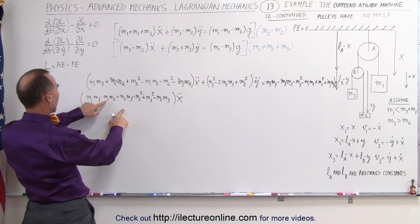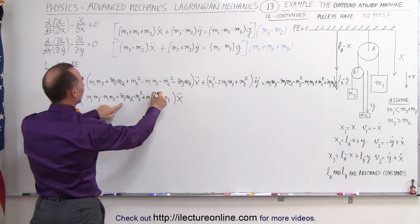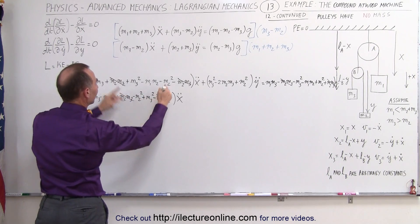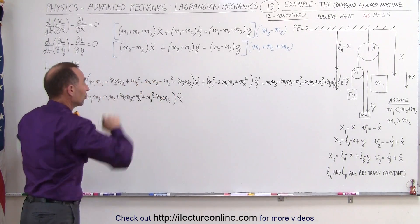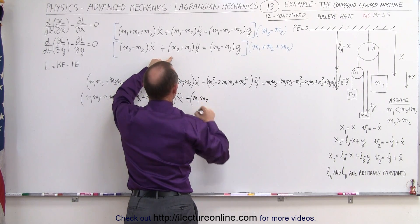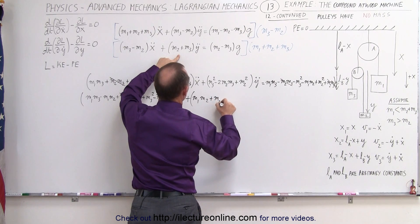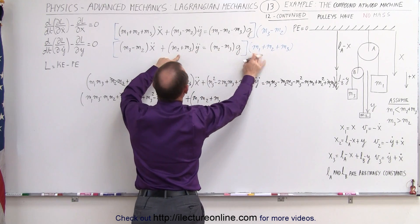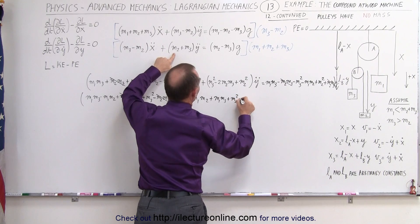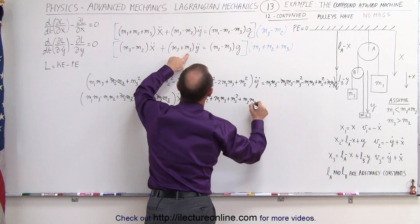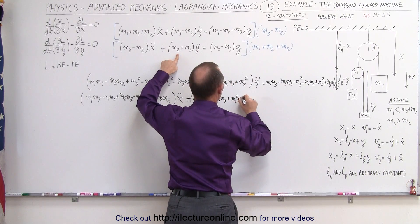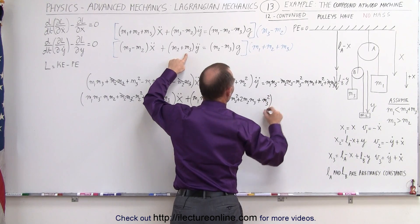Hopefully those x double dot terms are exactly the same, because when we subtract this from that, the x double dot terms will all drop out. Continuing, we multiply to get the y double dot coefficient: m1m2, plus m1m3, plus m2 squared, plus 2m2m3, plus m3 squared, multiplied times y double dot.